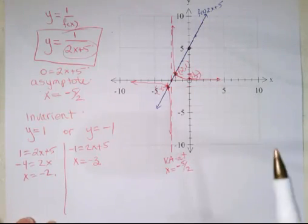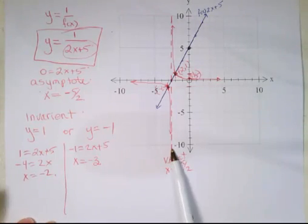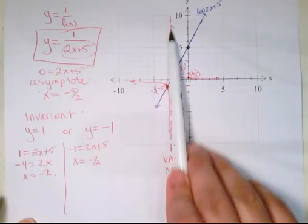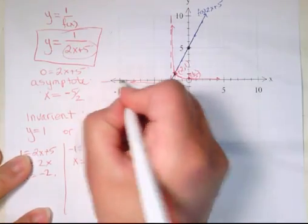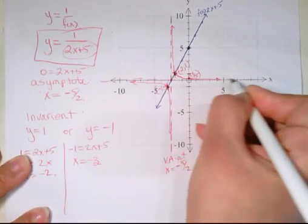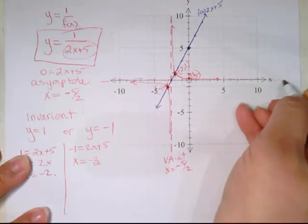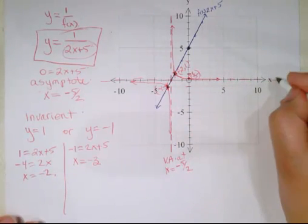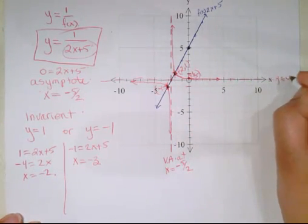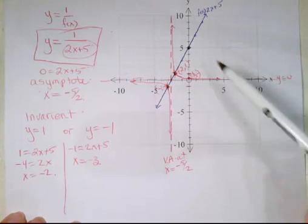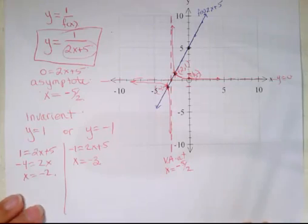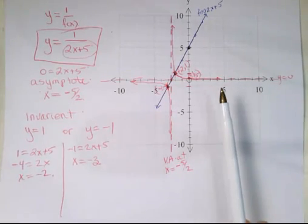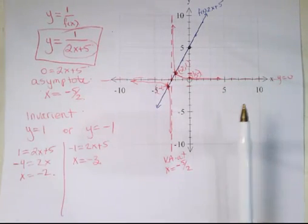Make sure you label your vertical asymptote at x = -5/2. The horizontal asymptote is y = 0, and it's clear why — you can never get zero from 1 over a linear function. So the red graph is our reciprocal function with those asymptotes and invariant points labeled.